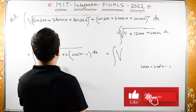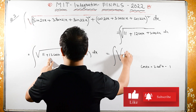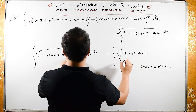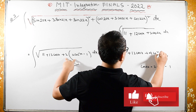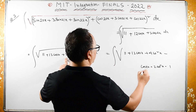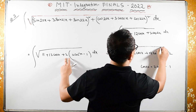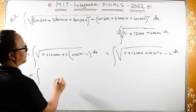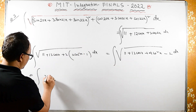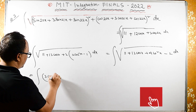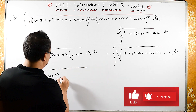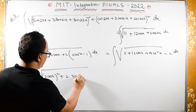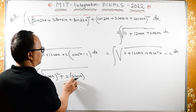Expanding, this equals the integral of the square root of 4cos²(x) plus 12 cos(x) plus 9 dx. We recognize that 4cos²(x) plus 12 cos(x) plus 9 is a perfect square.